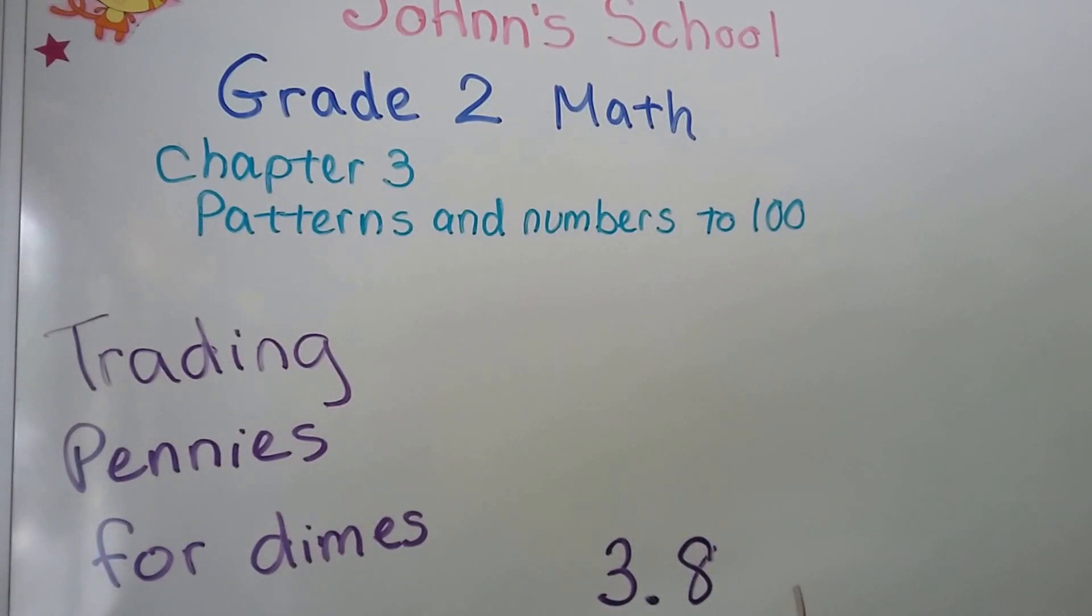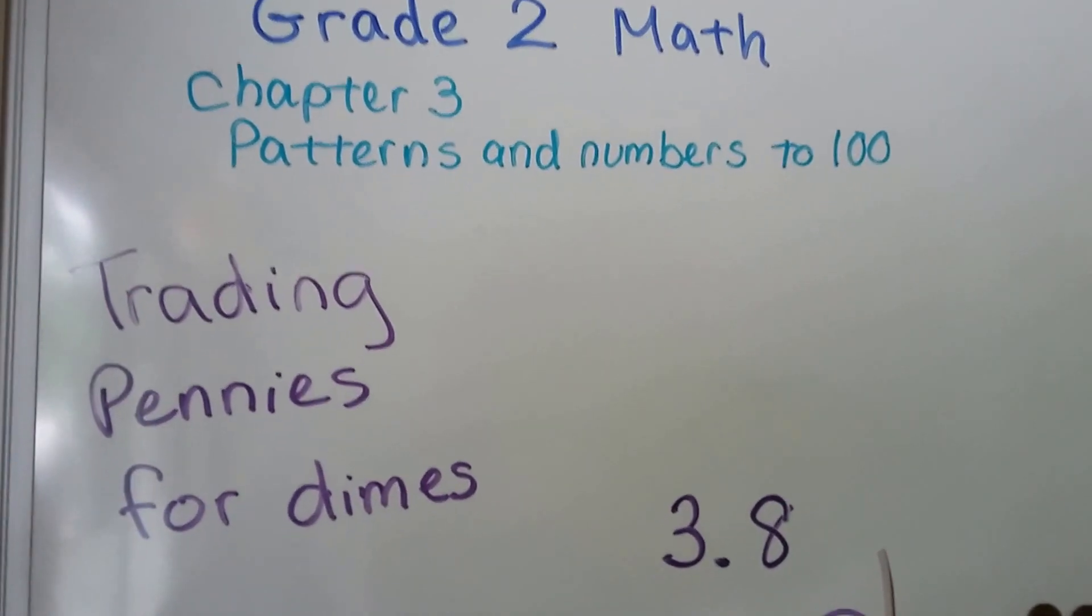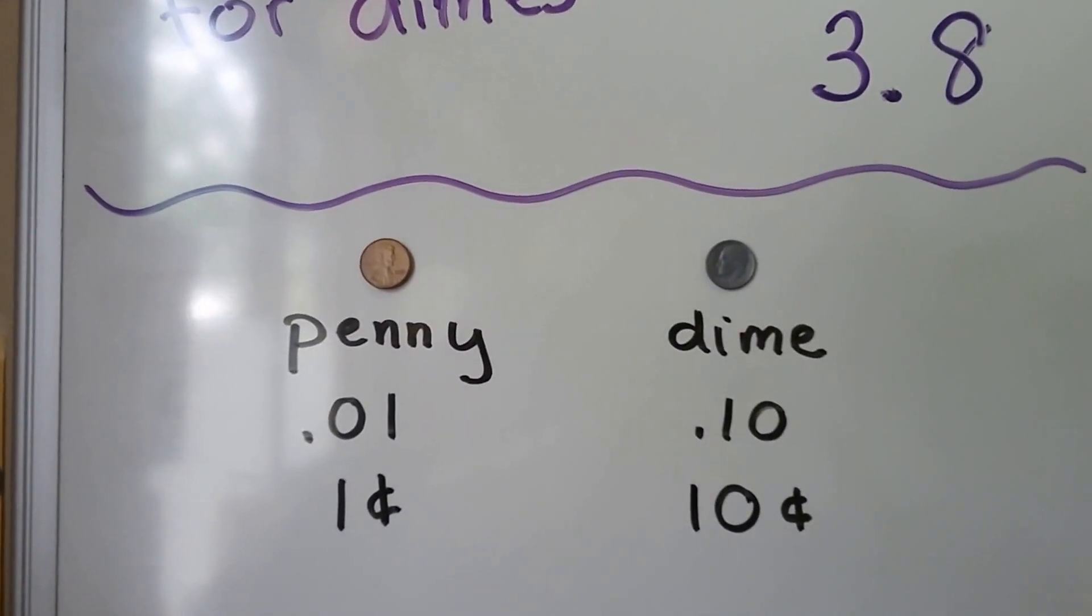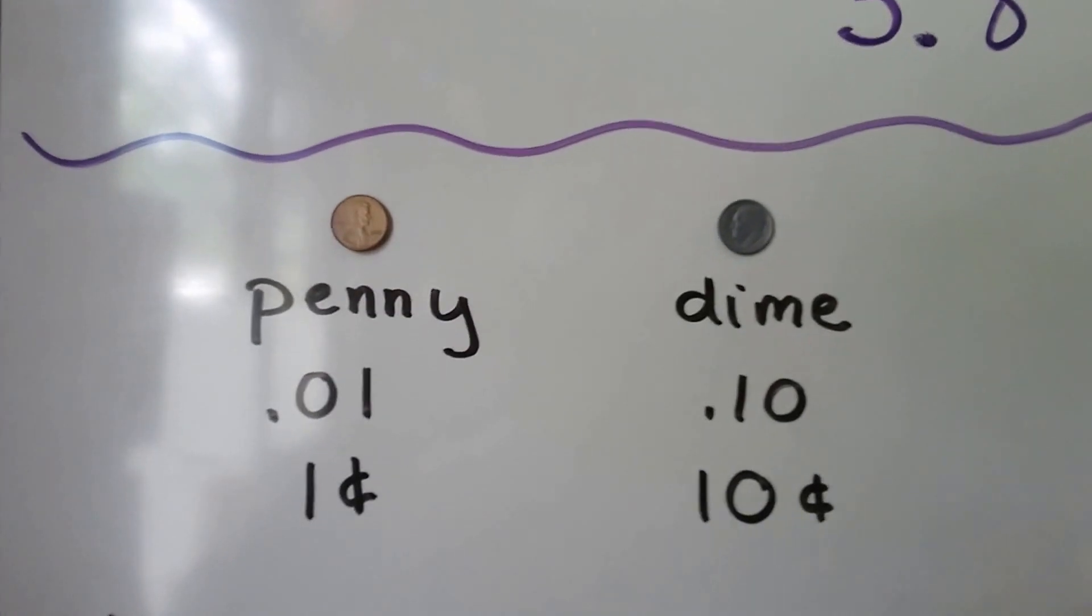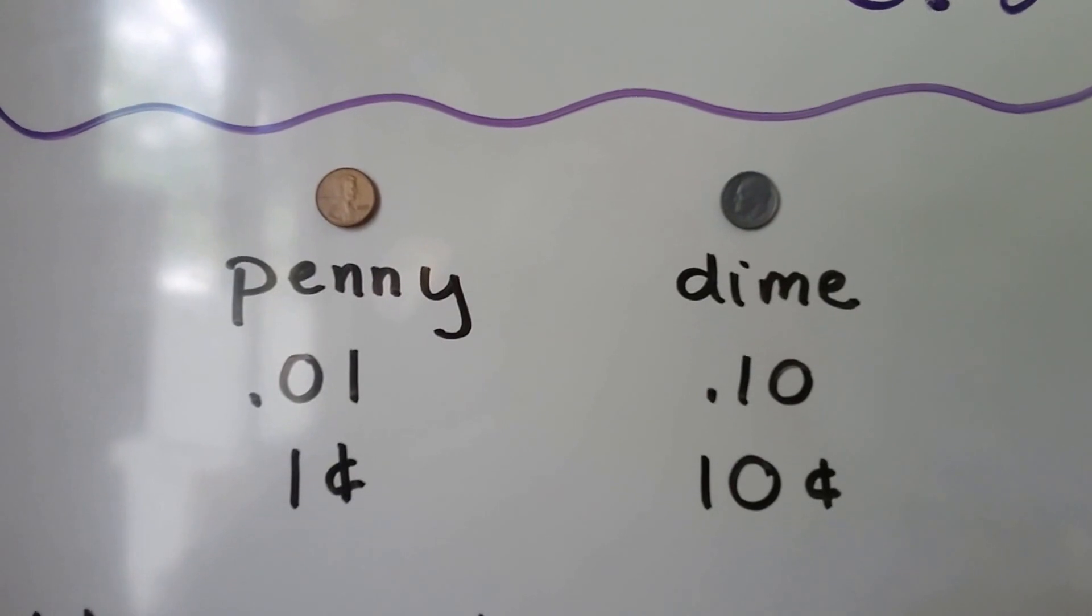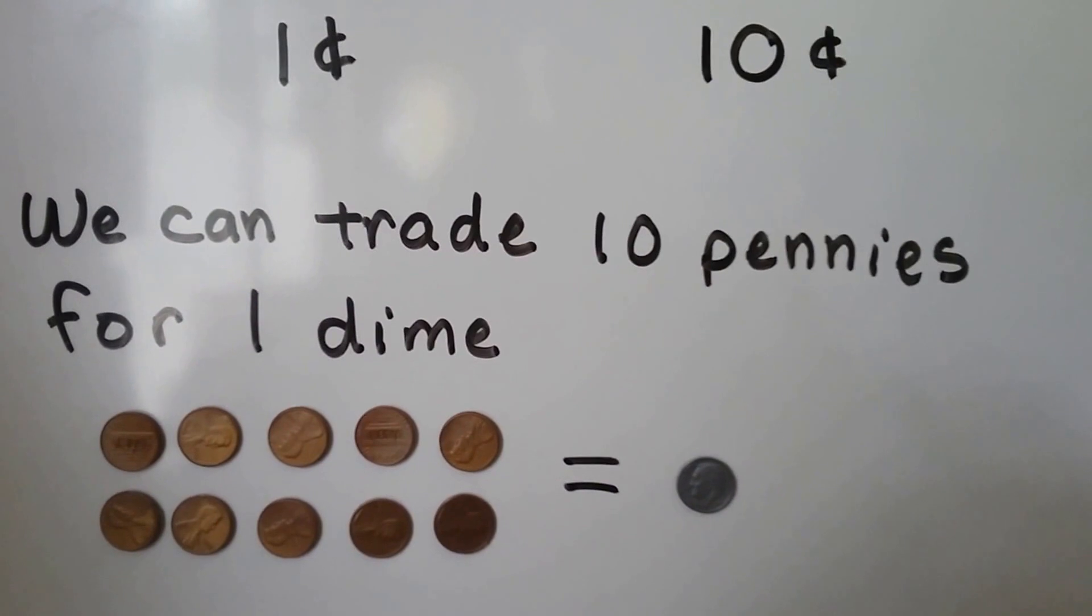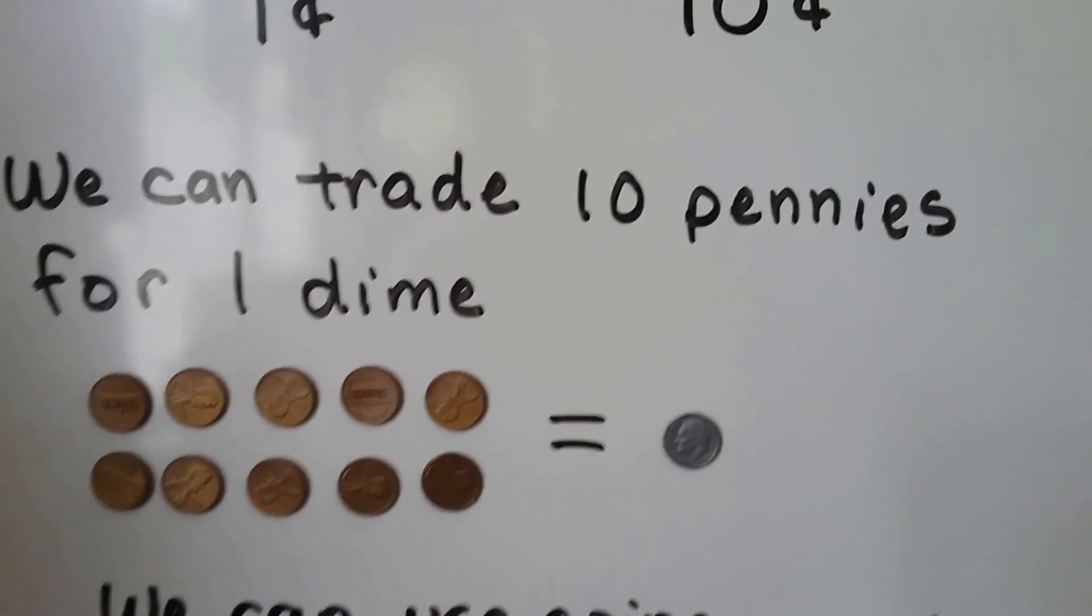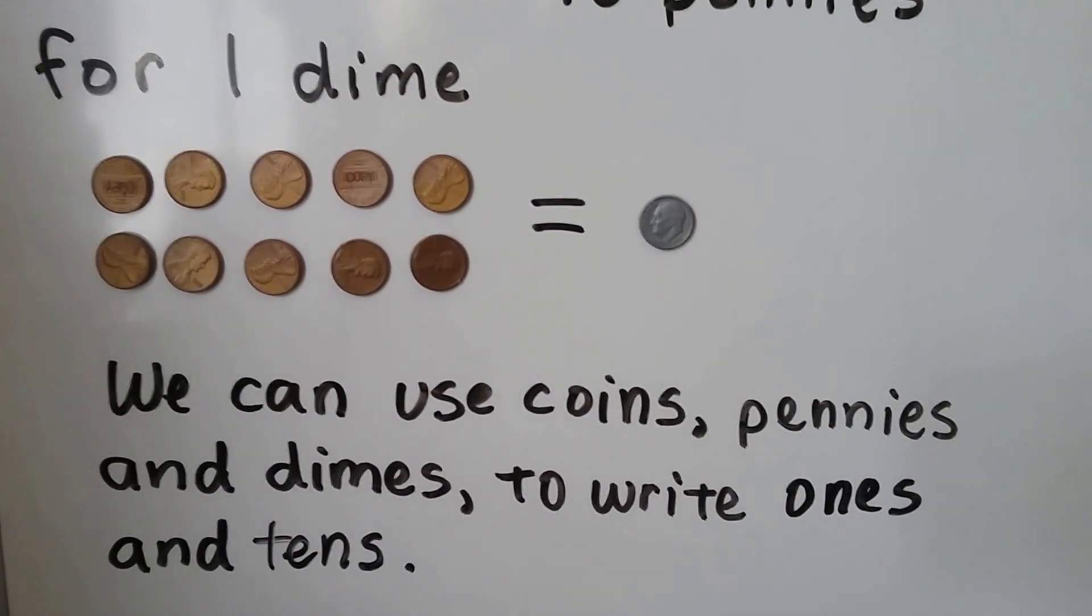Trading pennies for dimes. This is lesson 3.8 in chapter 4. We're going to do lots of money. One penny and one dime. One penny is one cent. A dime is ten cents. We can trade ten pennies for one dime. Ten pennies equals one dime. We can use coins, pennies and dimes, to write ones and tens.